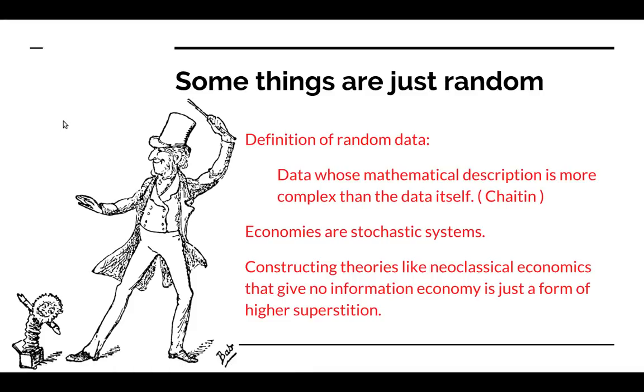Some things are just random. The formal definition of random data is any data whose mathematical description is more complex than the data itself. Superstition is based on the idea that there is something, some theories or spirits, behind the occurrence of random events. Economies are stochastic systems. And when you construct theories like neoclassical economics that give no actual information about what prices are, it's just a form of higher superstition.